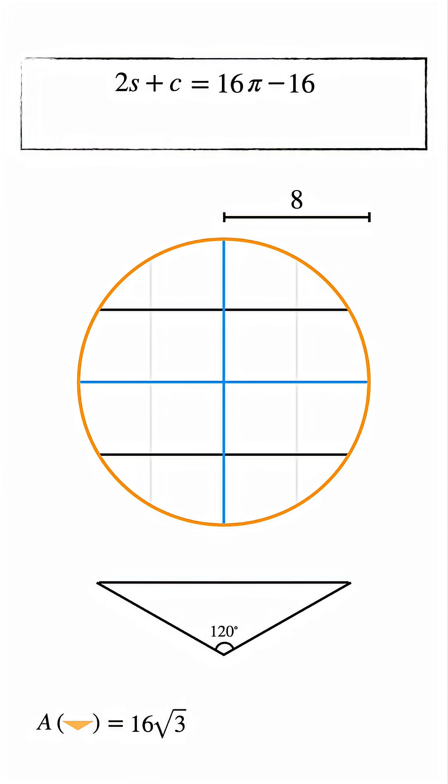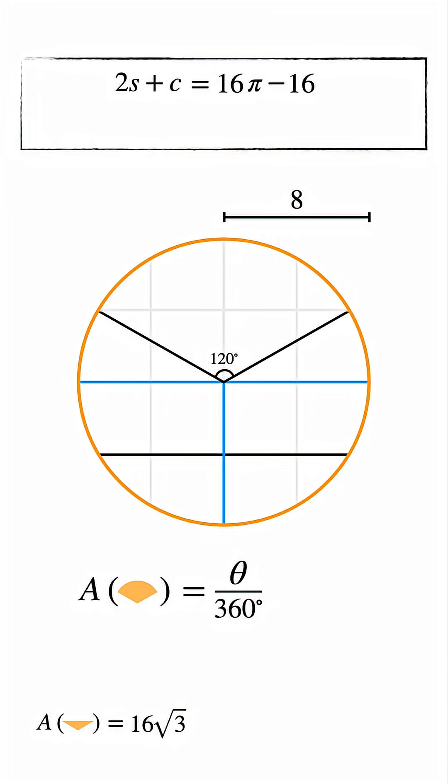Now clean up the isosceles triangle. The vertex angle is 120 degrees. When we move this triangle back into the circle, that same angle becomes a central angle for a sector. The area of the sector is the angle over 360 degrees times pi r squared. Substituting the values gives a sector area of 64 pi over 3.